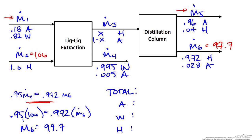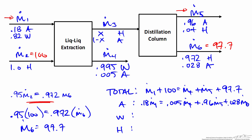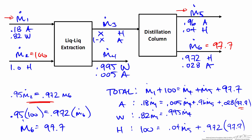The acetic acid balance gives 0.18 × m1 = sum of acetic acid in the three outlet streams, and we substitute the known value of m6 = 97.7. We also write balances for water and hexanol. Looking at the system of equations, the hexanol balance has only one unknown, m5, so we solve that first. Then with m5 known, we solve the acetic acid and water balances simultaneously for m1 and m4.